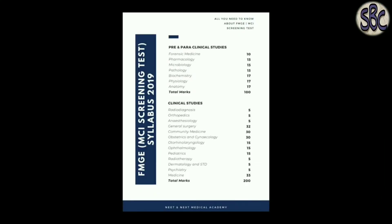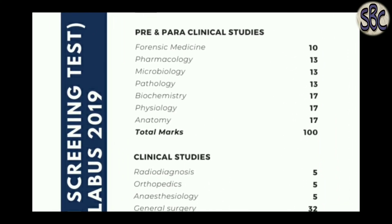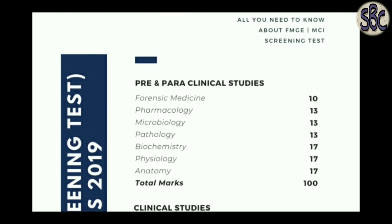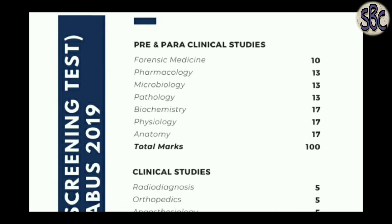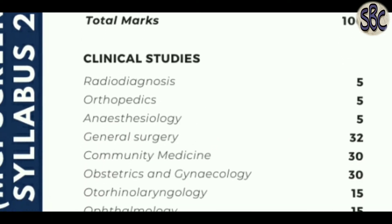Now we will talk about which subjects to prepare for the exam and how many questions and marks each carries. We have Pre and Paraclinical Studies and Clinical Studies. In Pre and Paraclinical Studies: Forensic Medicine has 10 questions, Pharmacology 13, Microbiology 13, Pathology and Biochemistry 17 each, Physiology 17, Anatomy 17 — totaling 100 questions.